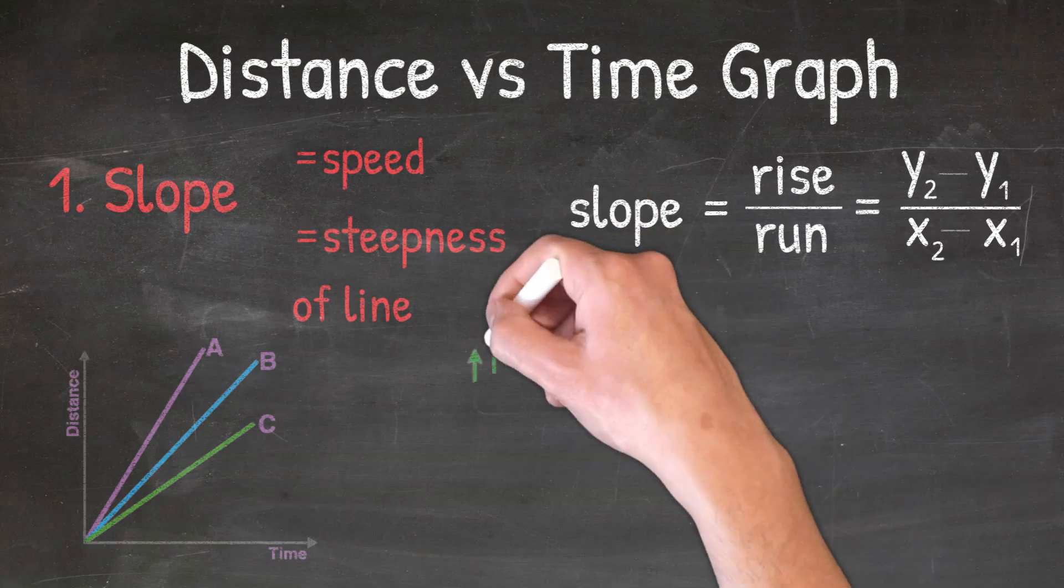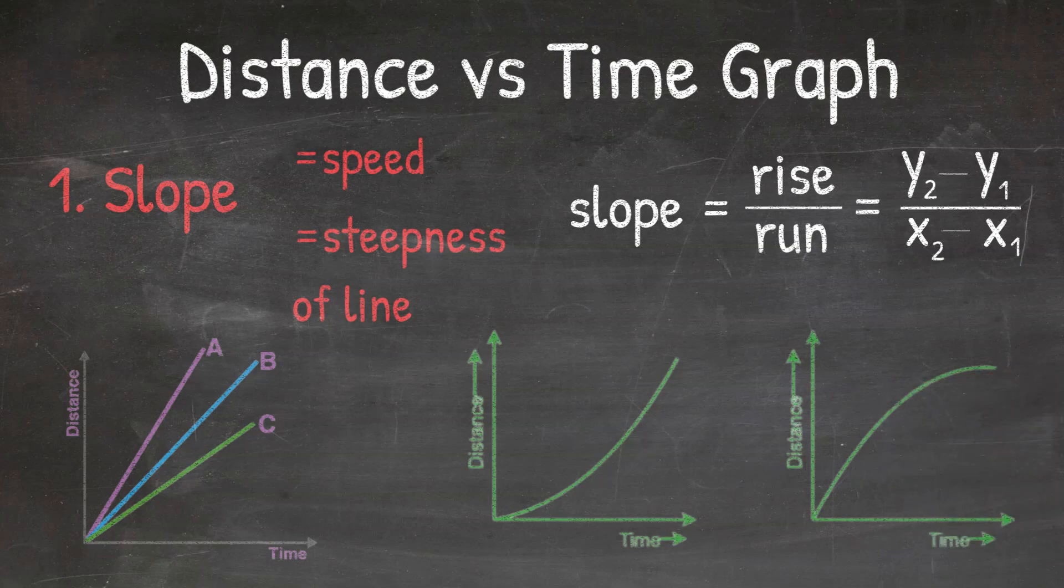If the slope is changing, meaning we have a curved line, then that means the speed is changing. This means the object is either speeding up or slowing down, as seen here in the graphs on the right.